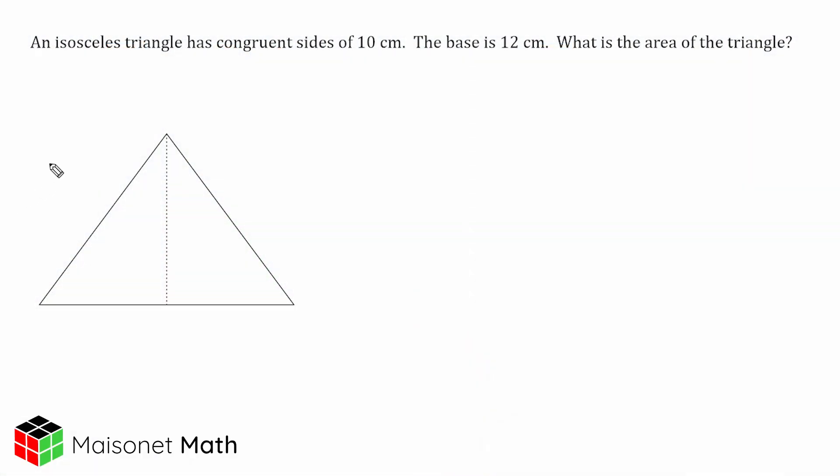What we have here in this problem is an isosceles triangle, and it is given that it has congruent sides of 10 centimeters. So let's go ahead and label this side 10 and this side 10. It is also given that the base is 12 centimeters, so this would be the base length right here, slightly longer than each of these two congruent sides. We have to use this information to figure out the area of the triangle.